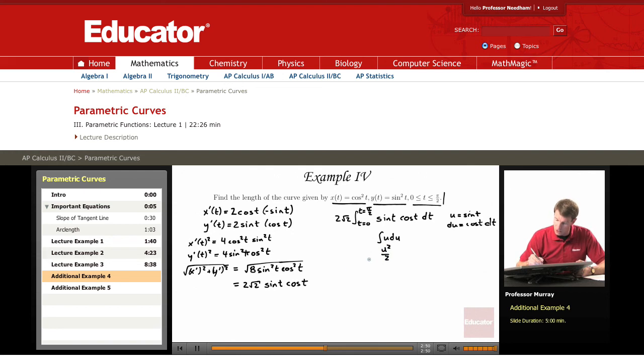And now I'll convert things back into t. So this is 2√2 times sin²(t) over 2 evaluated from t = 0 to t = π/2.